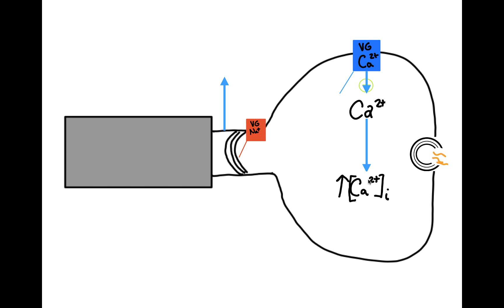In this video, we're going to discuss in detail how the vesicle fuses with the membrane. We'll start by identifying what proteins are in the vesicle and in the presynaptic membrane that are required for vesicular fusion. Then we'll talk about how all these proteins interact in order for vesicular fusion to occur.